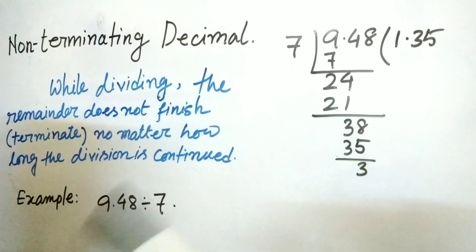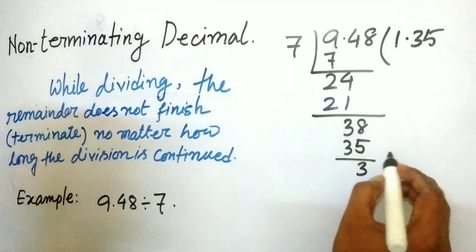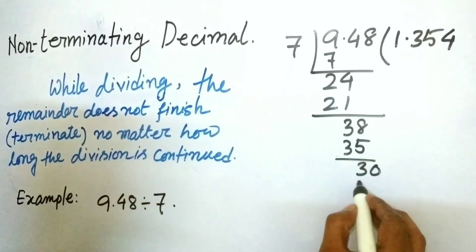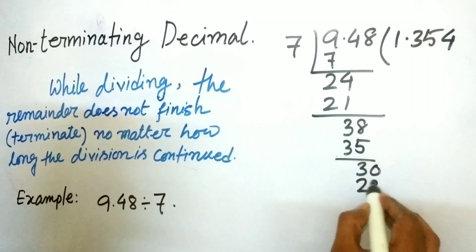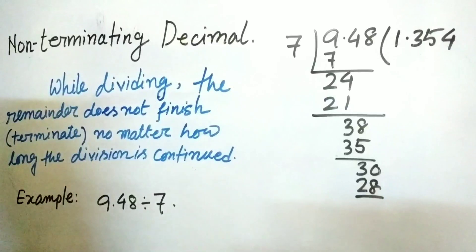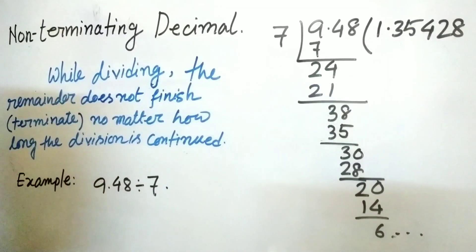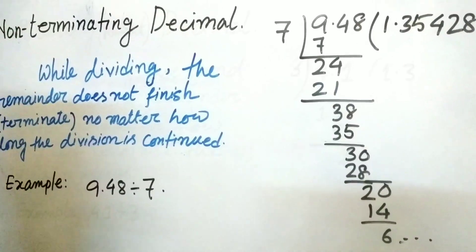Now see, for decimal numbers, we can put infinite number of zeros at the right of the decimal point. So we can put 0 after it and continue this division. Like that, it will go on and it will never end. This is called non-terminating decimal.